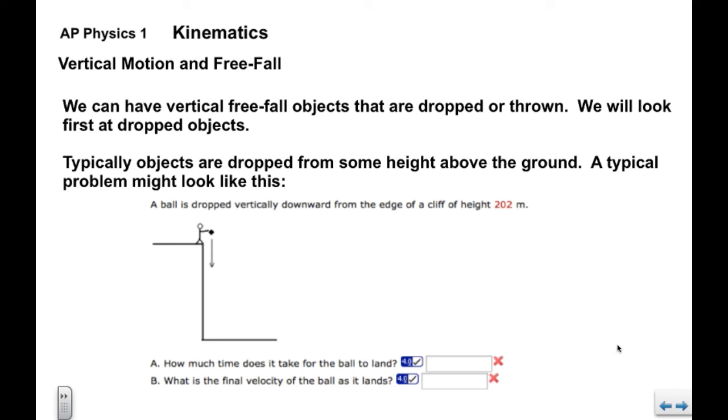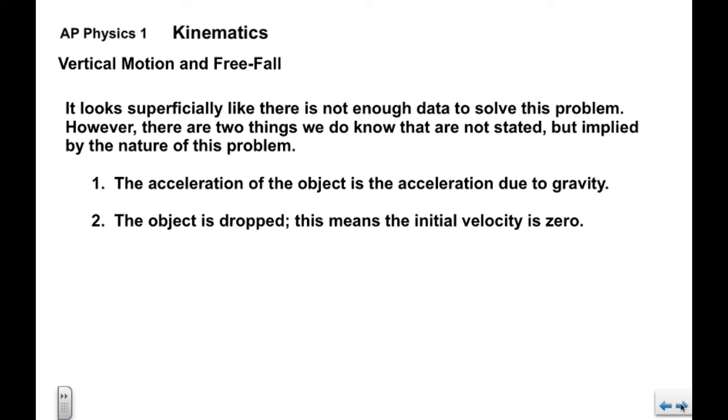Now we're going to look at a couple different types of vertical free fall objects. We can have objects that are dropped or thrown. We're going to look at the dropped ones first. Typically an object is dropped from some height above the ground, otherwise it's not a whole lot of fun. A typical problem might look like this: the ball is dropped vertically downward from the edge of a cliff of a known height. We're asked about the time it takes for the ball to land and we're asked about the final velocity as the ball lands.